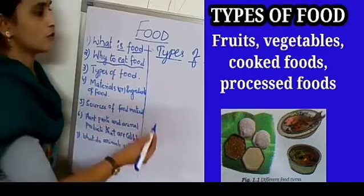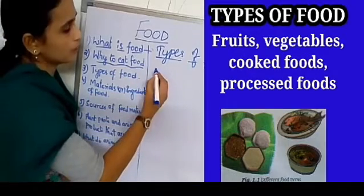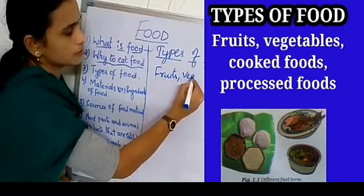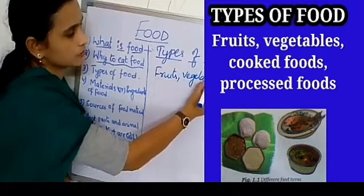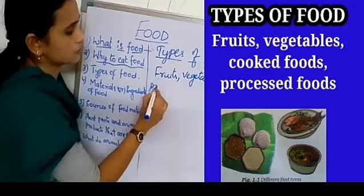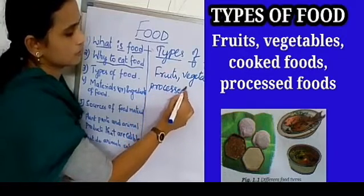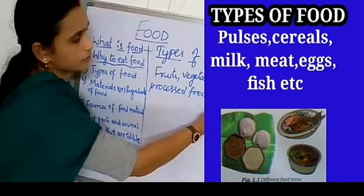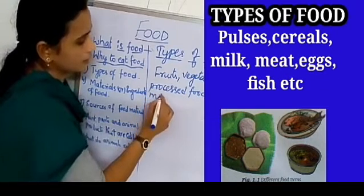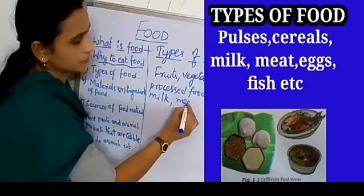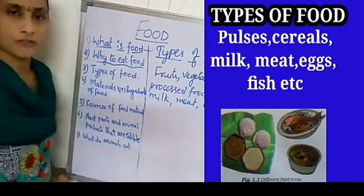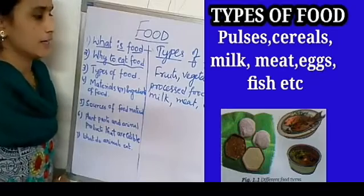There are so many varieties of food. For example, we know so many types of food like fruits, vegetables, processed foods, pulses, milk, meat, eggs. All these are types of food we eat in our daily life.